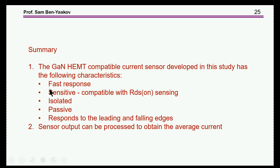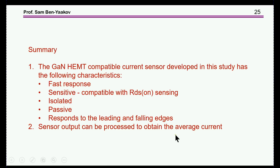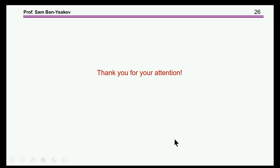In summary, the GAN current sensor developed has the following characteristics: very fast response, sufficient sensitivity to be compatible with the low voltages expected across the RDS(on), isolation, and passive operation with no active amplification. It responds only to the leading and falling edges of the signal. It has also been shown that the sensor output can be processed to obtain the average inductor current. Thank you very much for your attention.